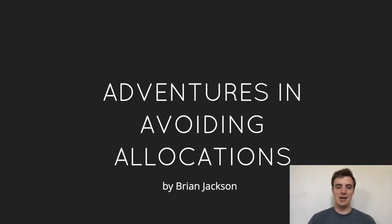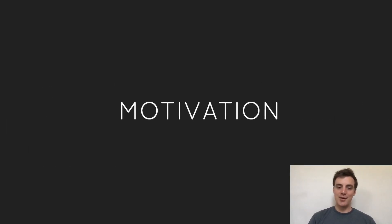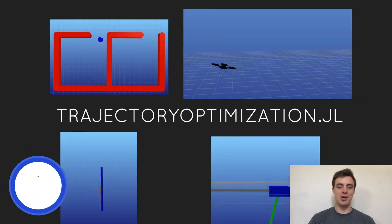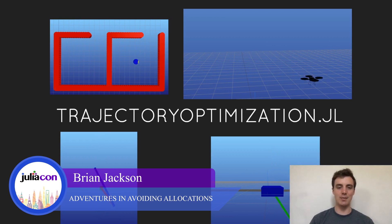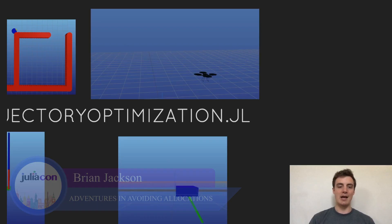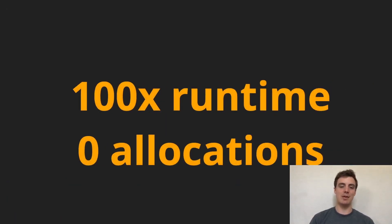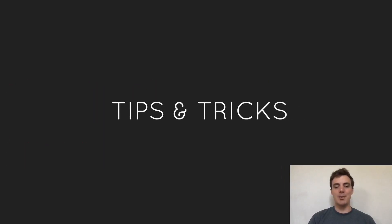Hi, my name is Brian Jackson. Today I'll be talking about some of the adventures I've had in Julia over the last year in avoiding allocations. As a brief motivation and background, last year at JuliaCon I gave a talk on trajectory optimization, and over the following months I spent time optimizing my code for performance — particularly allocations — and achieved my goal of about a 100x improvement in runtime and zero allocations. This talk is a brief compilation of tips and tricks I learned through that process.